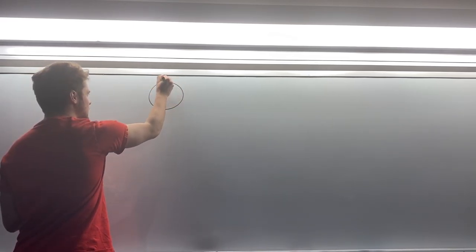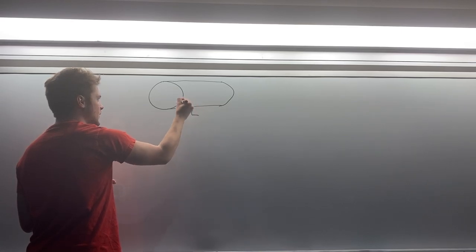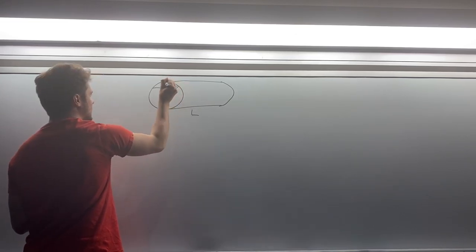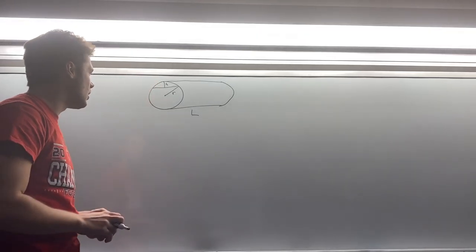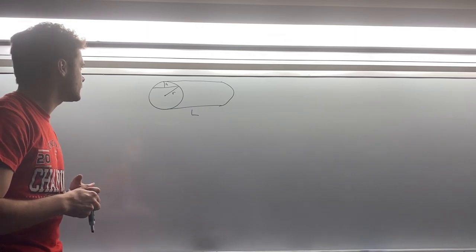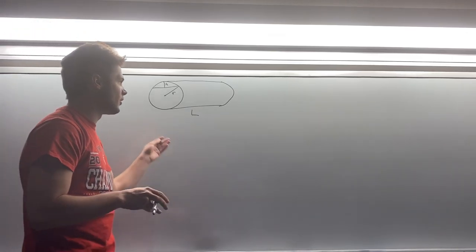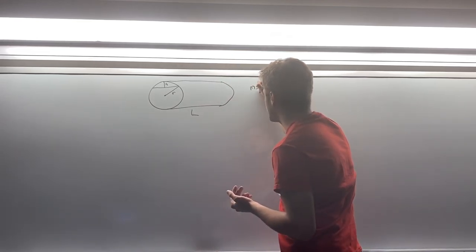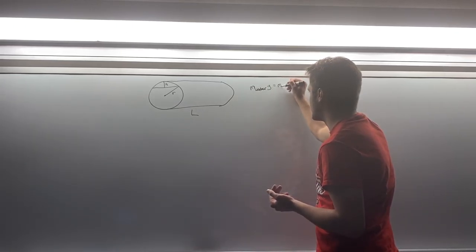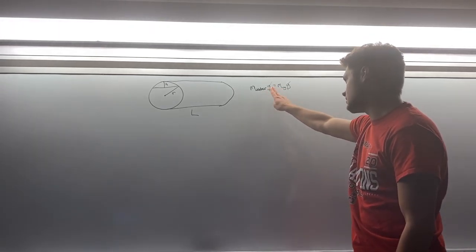We have our log here and it's going to be at a length of L, a radius of R, and the water level is going to be at some distance H from the top of the log. How could we calculate density given these three parameters? If we know anything about buoyancy, the weight of the water displaced has to equal the weight of our object. So the mass of our water times g equals the mass of our log times g — those g's cancel.